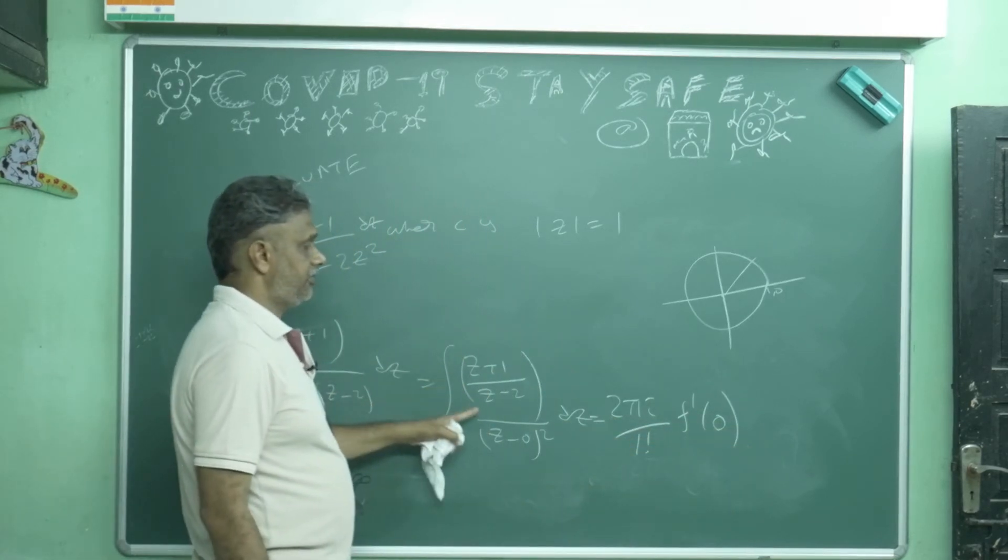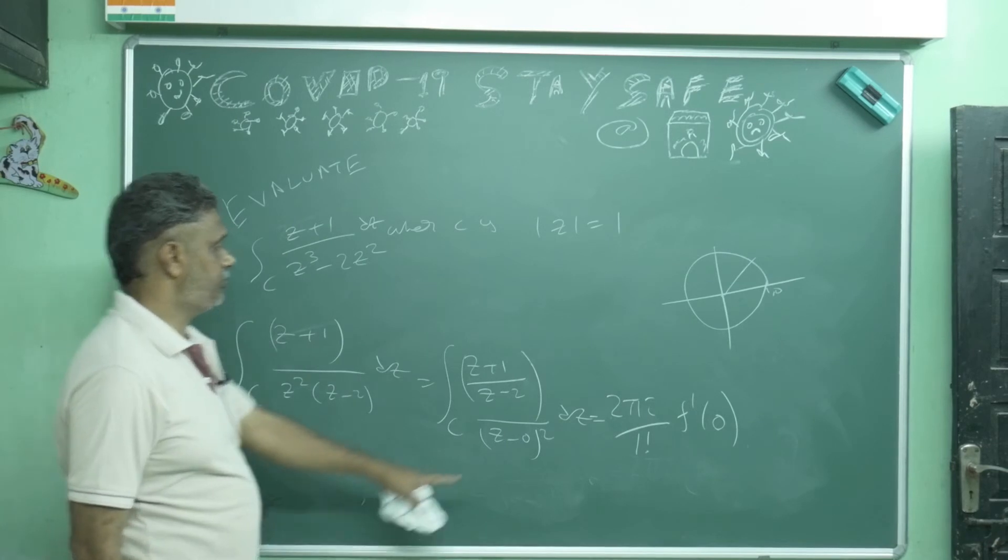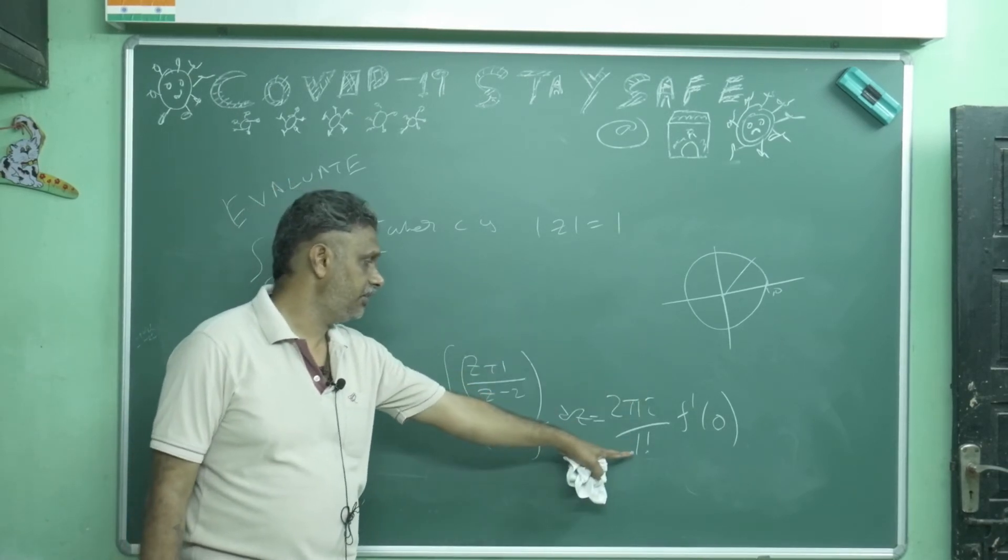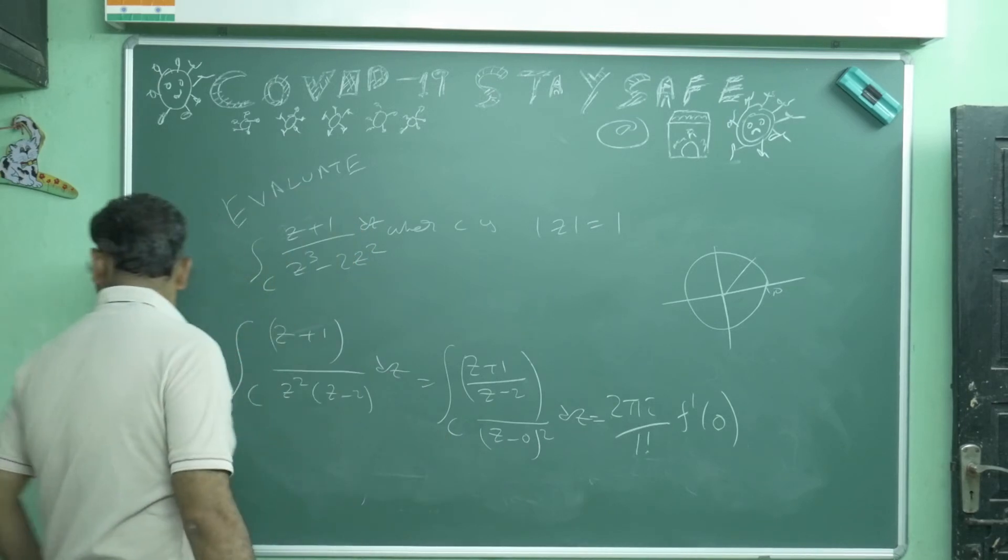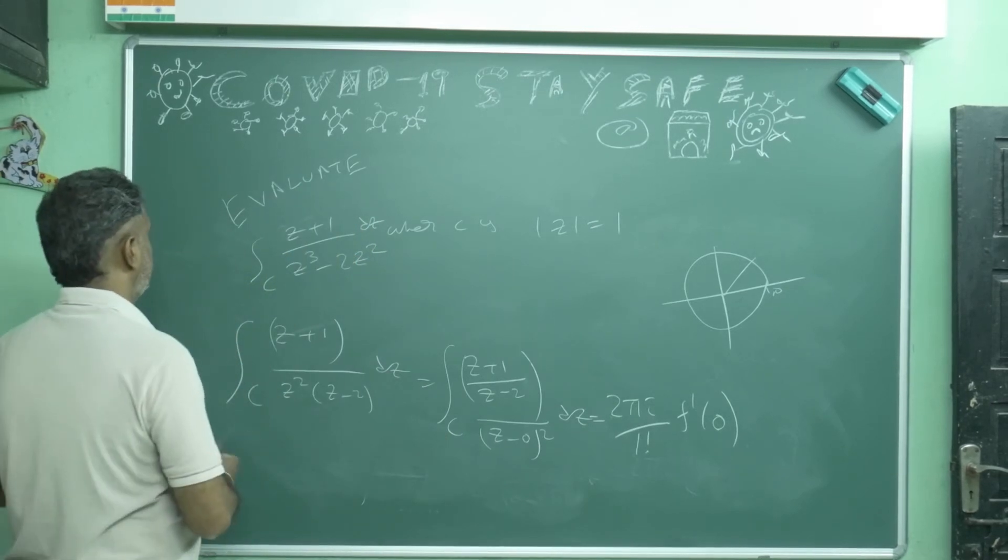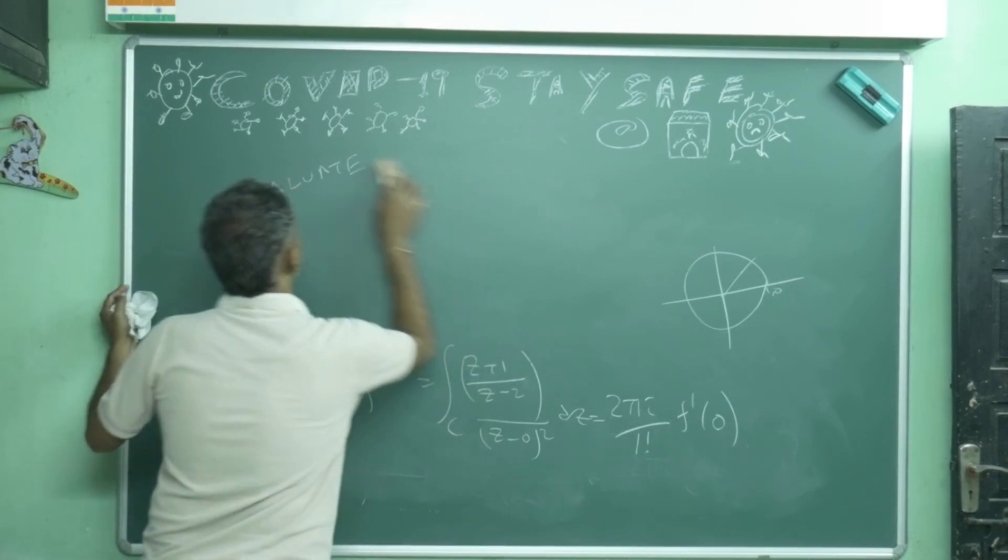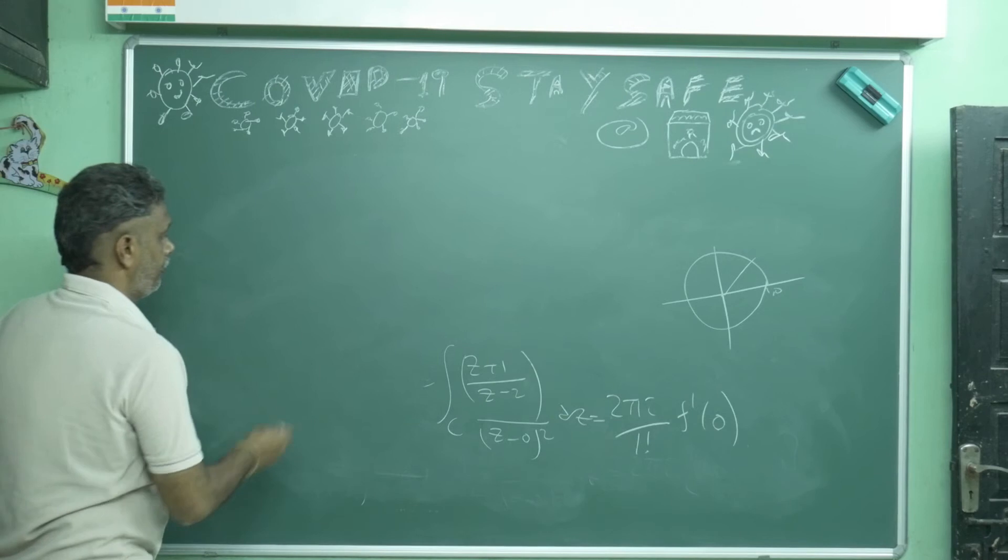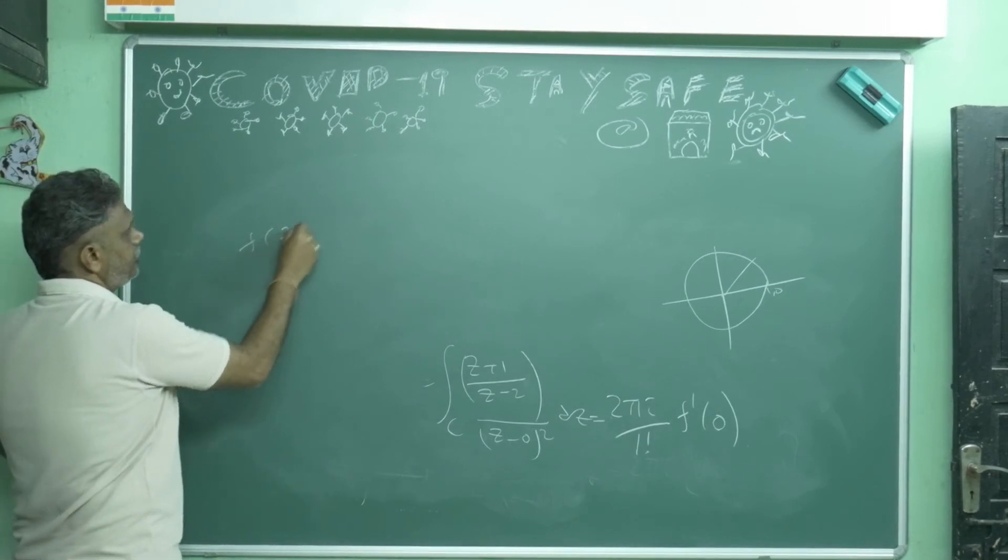My f of z is (z+1) by (z-2). So f of z is equal to (z+1) over (z-2).